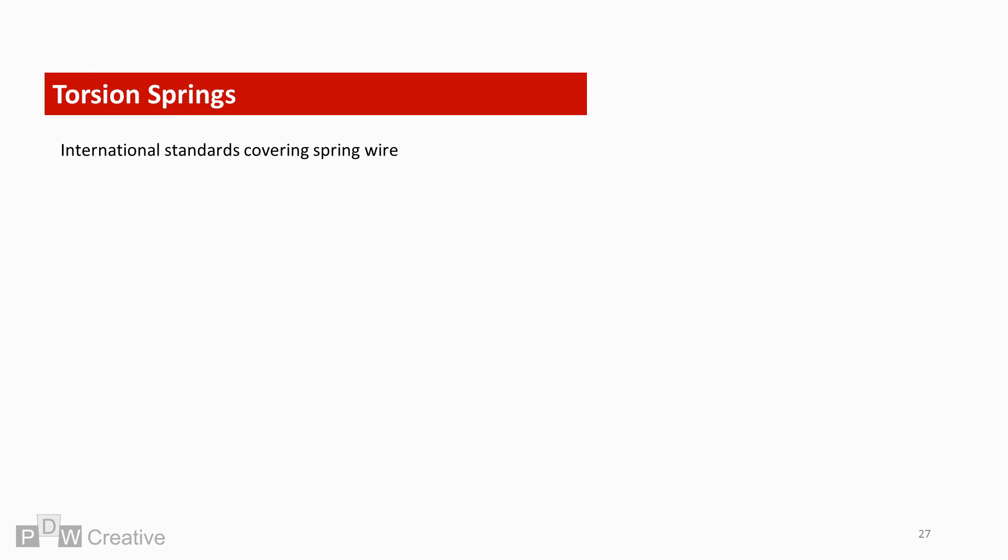Music wire and hard drawn wire types are high carbon content. They tend to be magnetic and lack corrosion resistance. ANSI ASTM standards A228 and A227 cover these materials. Alloy steel wire tends to be heat treated to relieve warming stress and is governed by ASTM A401.